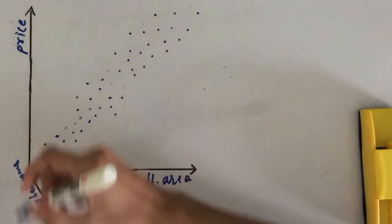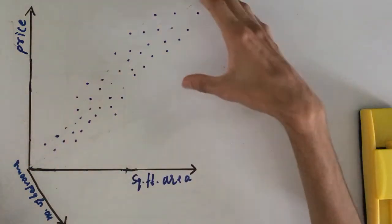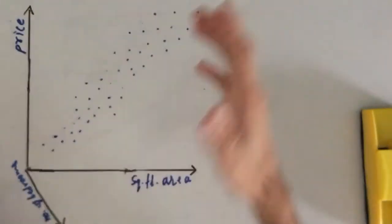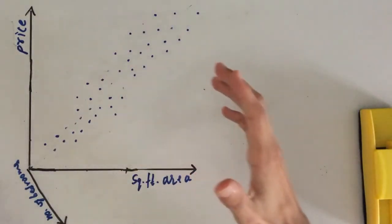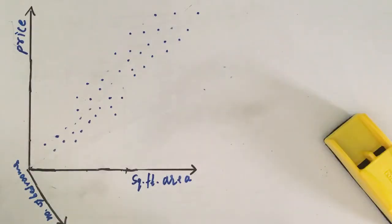So all of the data that is here is in a three-dimensional plane. I hope you can visualize that. Now let's say if you want to find the price of the house whose number of bedrooms is here and square foot area is here, how do we find that?